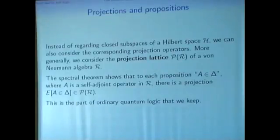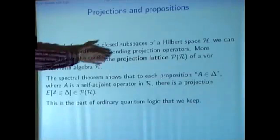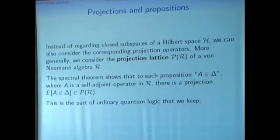We'll start from the projections in the Hilbert space, or more generally from the projection lattice of a von Neumann algebra. The reason is that we have the spectral theorem, which can be read in a way that to each proposition of the kind A is delta, that corresponds to some projection E.